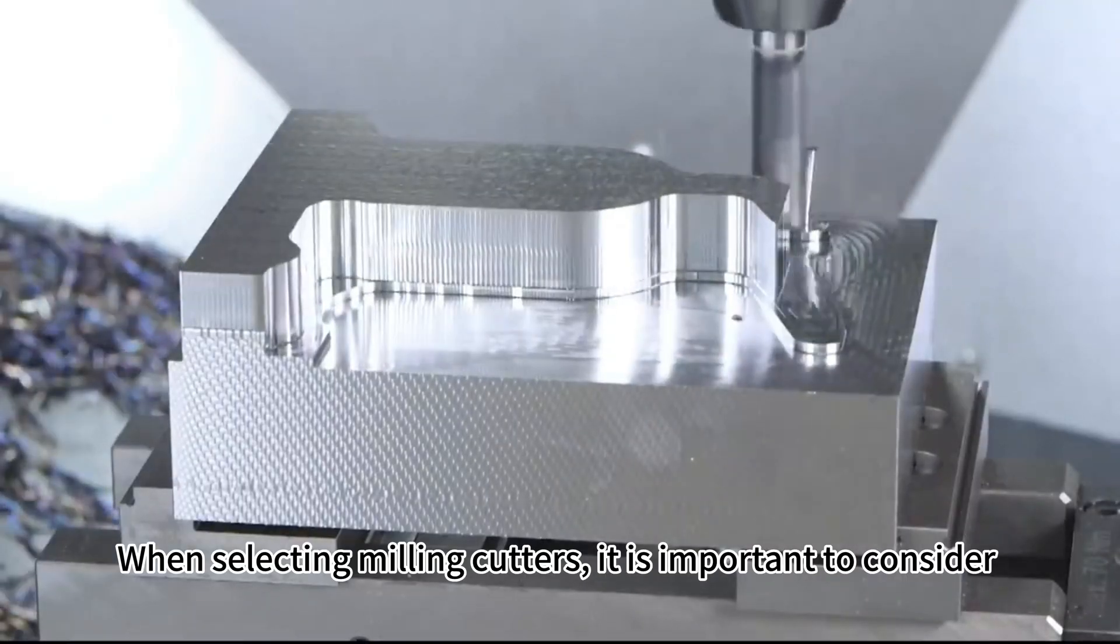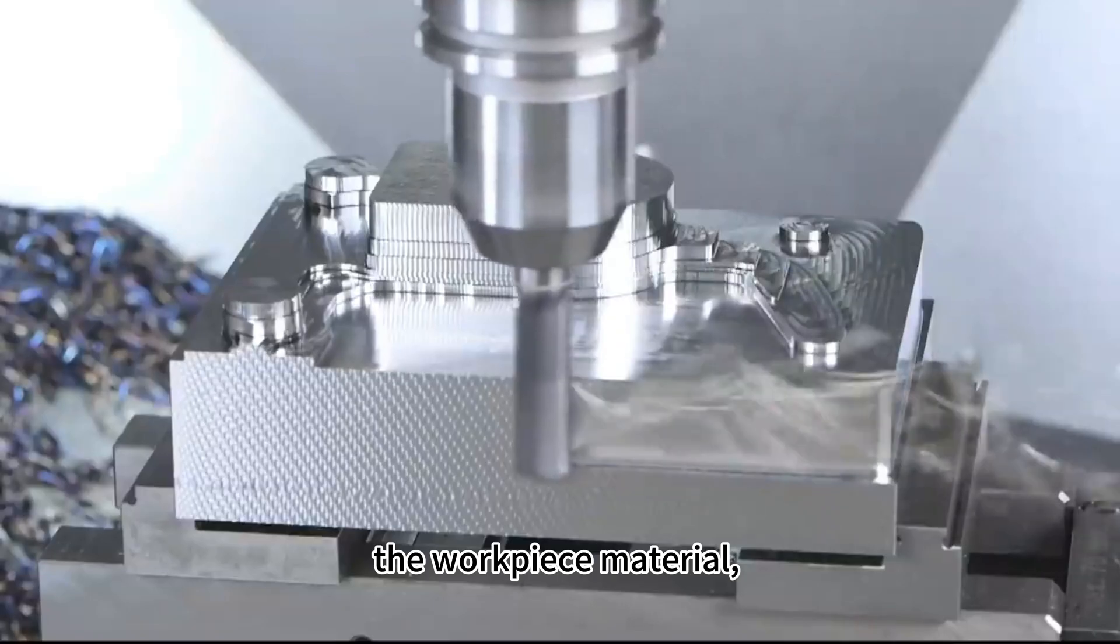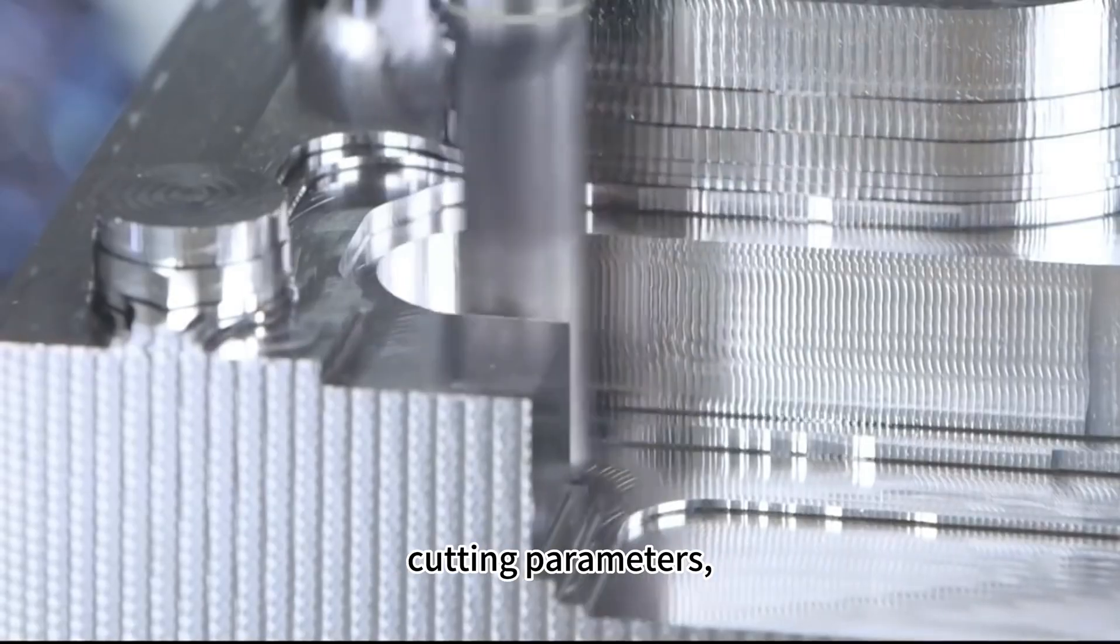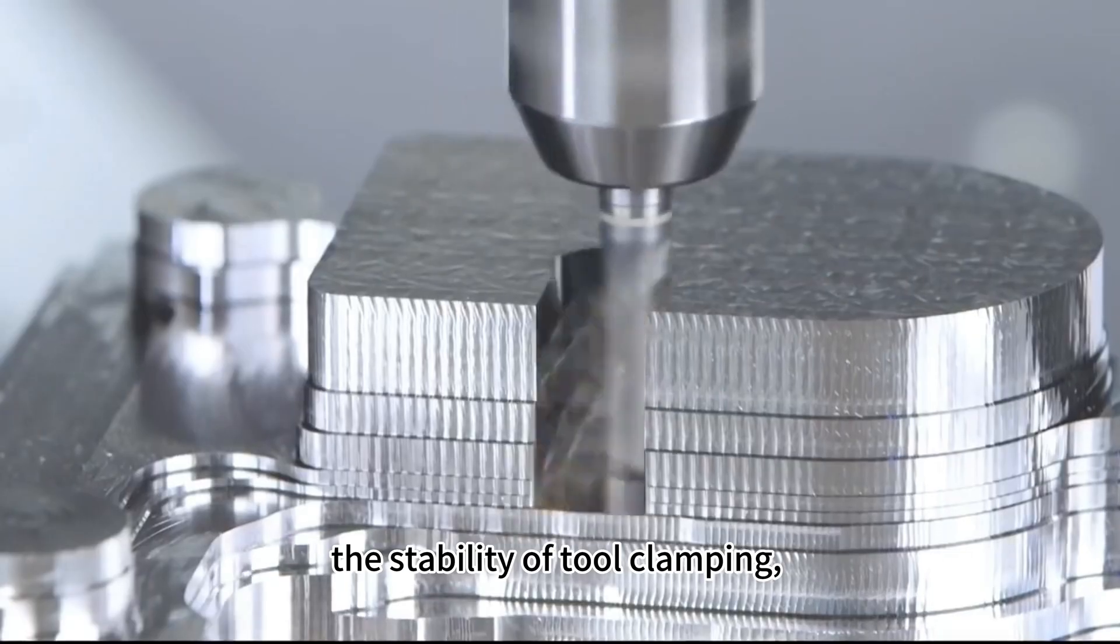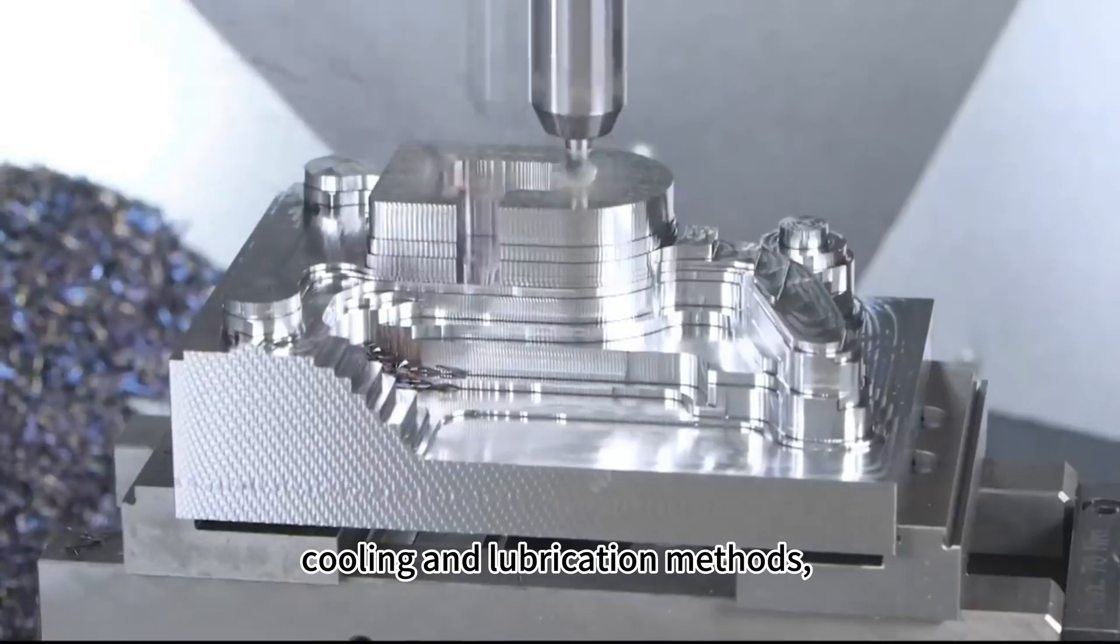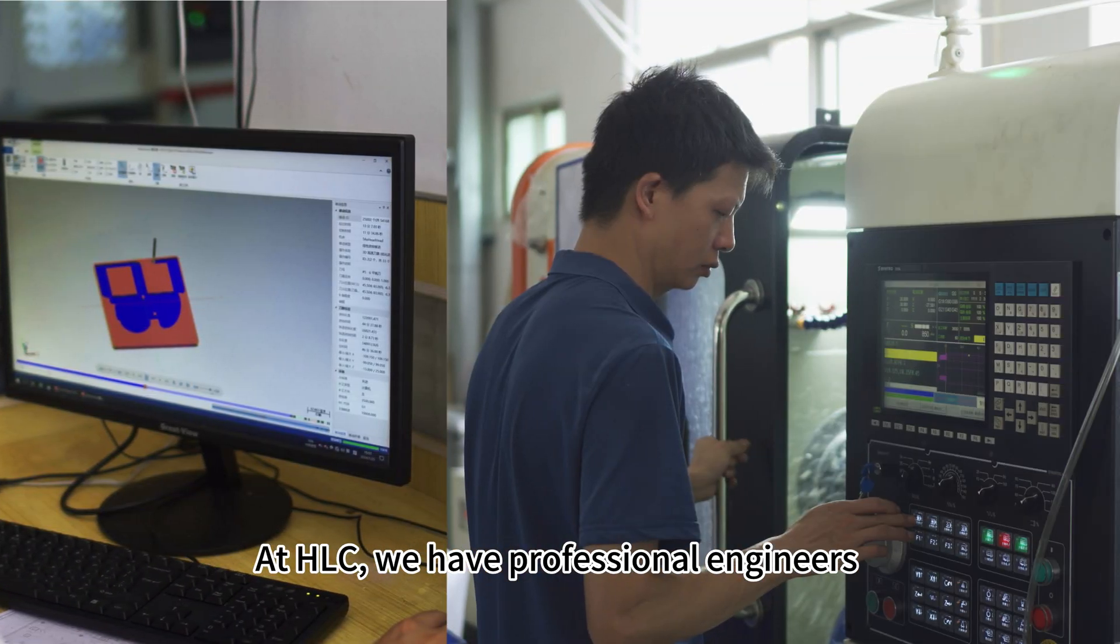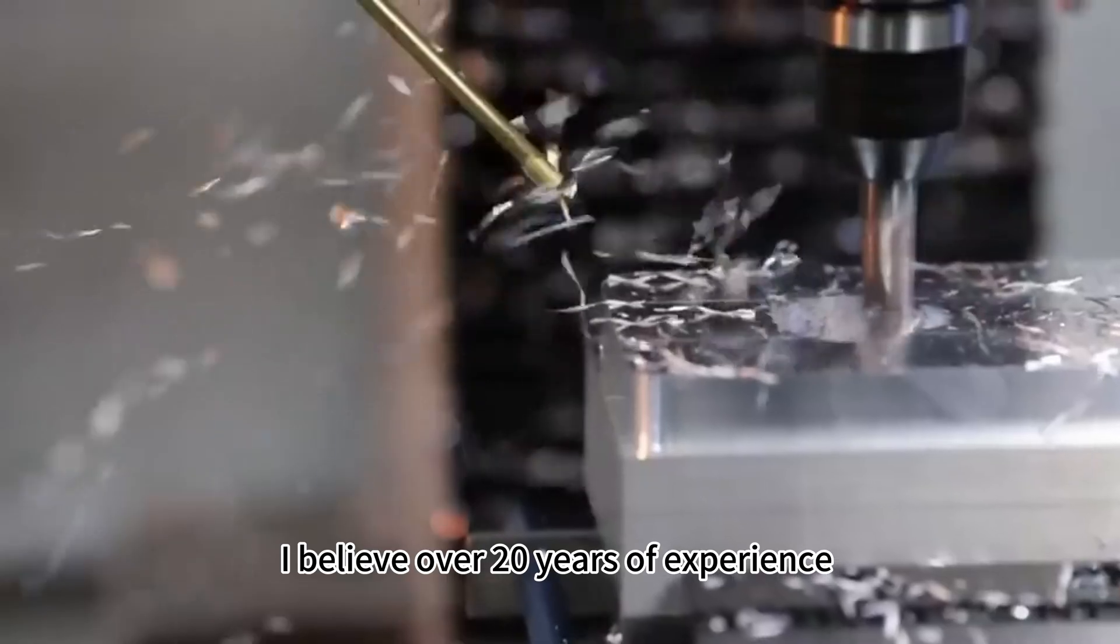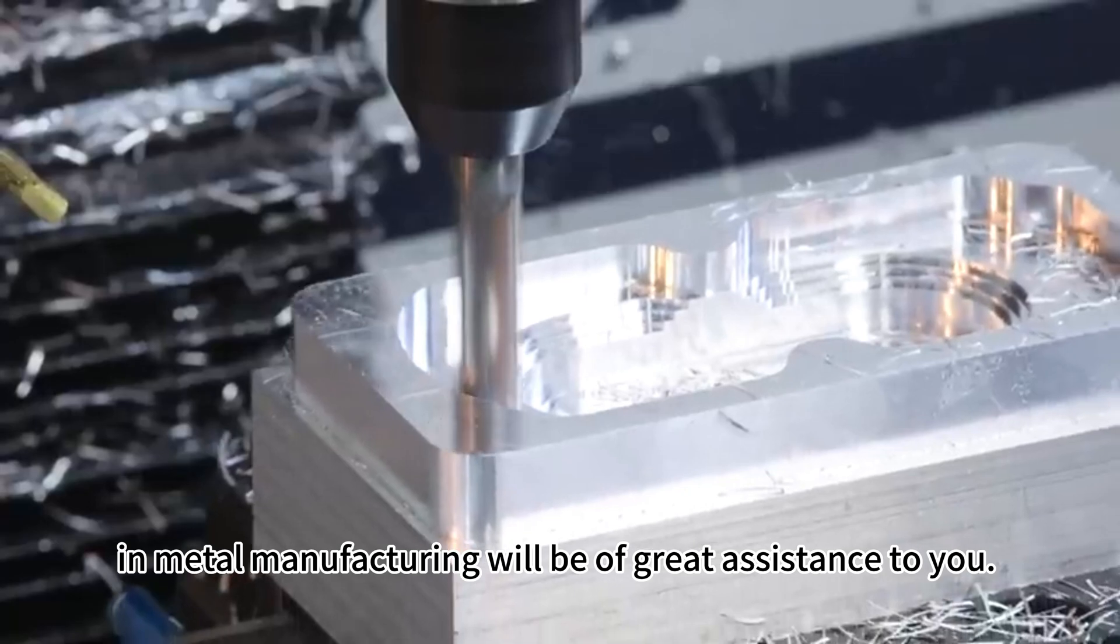When selecting milling cutters, it is important to consider the workpiece material, tool material, shape and size of the tool, cutting parameters, the stability of tool clamping, and cooling and lubrication methods. At HLC, we have professional engineers. I believe over 20 years of experience in metal manufacturing will be of great assistance to you.